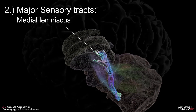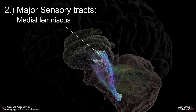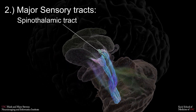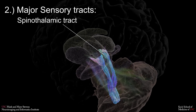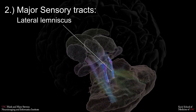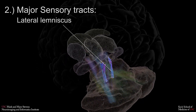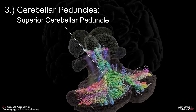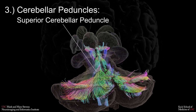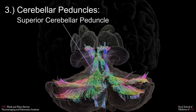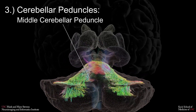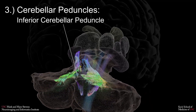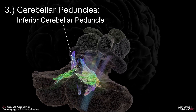The second group comprises major sensory tracts, including the medial lemniscus, the spinothalamic tract, and the lateral lemniscus. The third group consists of the cerebellar peduncles, which include the superior cerebellar peduncle, the middle cerebellar peduncle, and the inferior cerebellar peduncle.